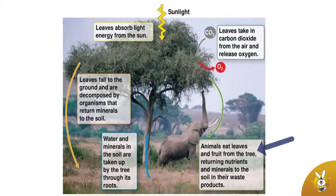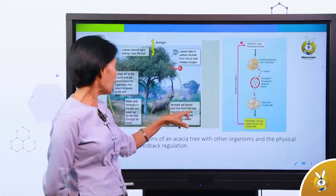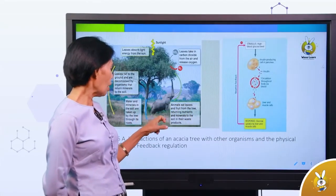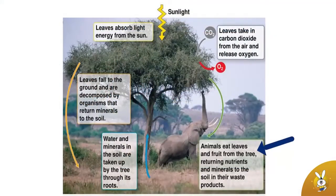Animals feed on leaves and fruit from the tree. Animals return nutrients and minerals to the soil through their waste products.